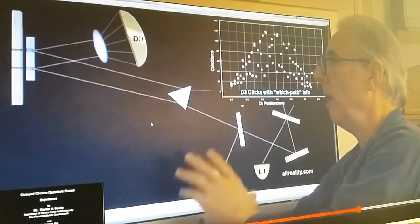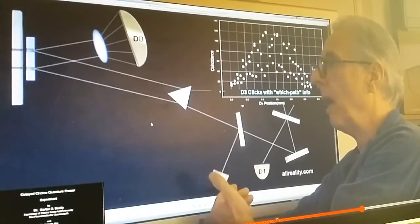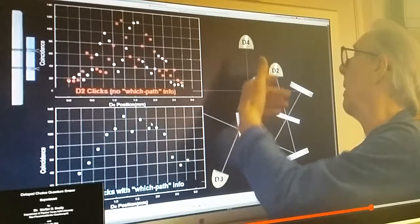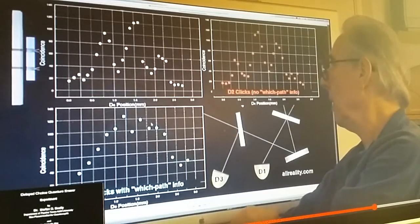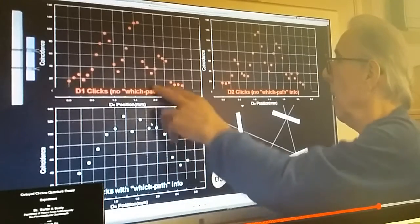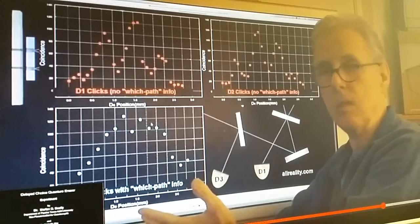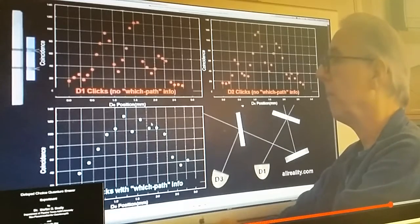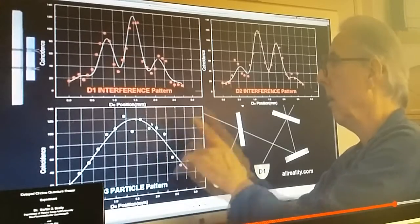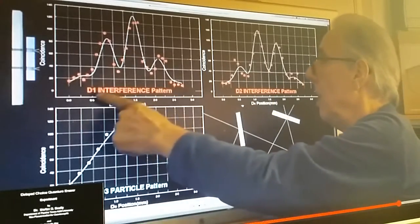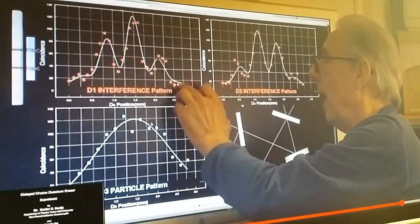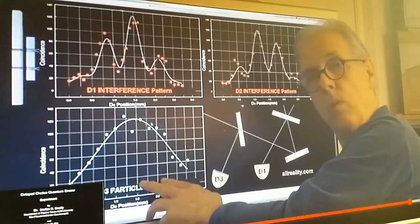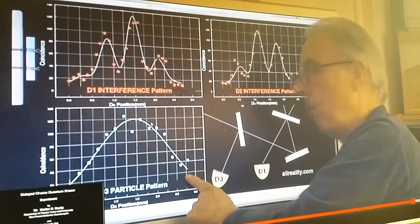And then you plot, for instance for D3, you plot which of these photons were detected by D3 and you plot which were detected by D2 and so on. And of course D2 and D1 have no which path information. Only D3 and D4. Once you've separated out the points and when they're detected, you see that photons that had no which path information forms a fringe pattern. Particles that were detected with which path information forms a particle pattern.